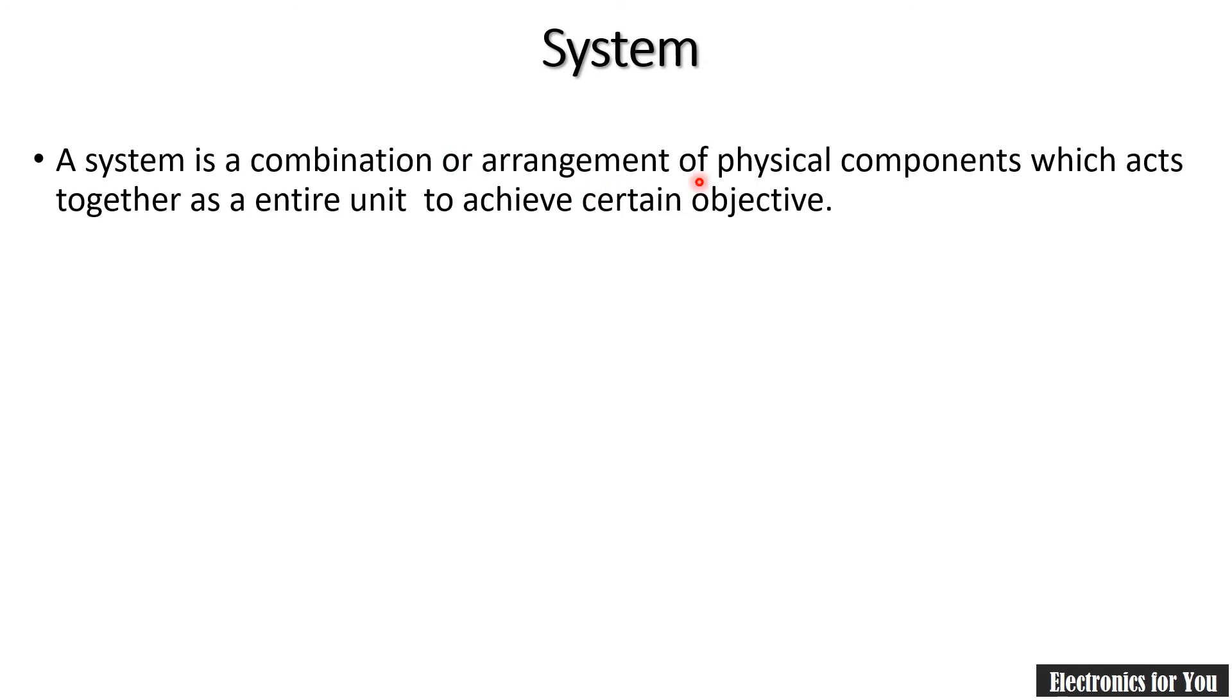So, system is a combination or arrangement of different physical components which acts together as an entire unit to achieve certain objective. Two important points are here in the definition of system: it is a combination or arrangement of different physical components and they are designed to achieve certain objective.